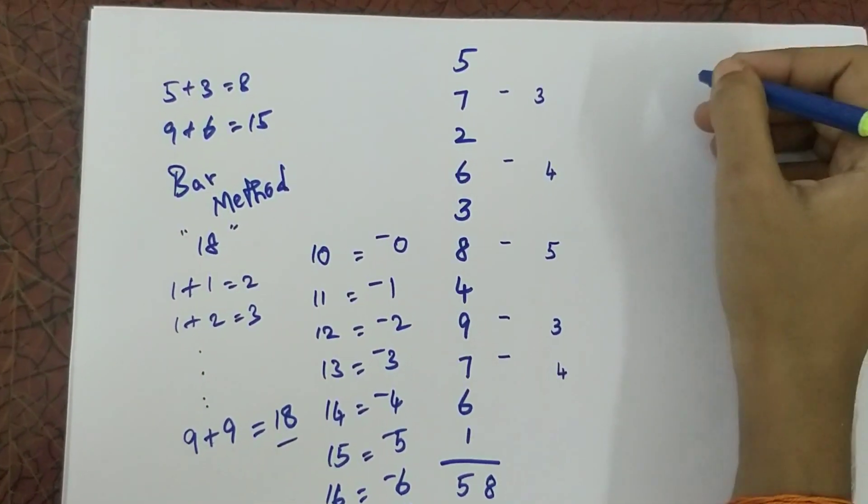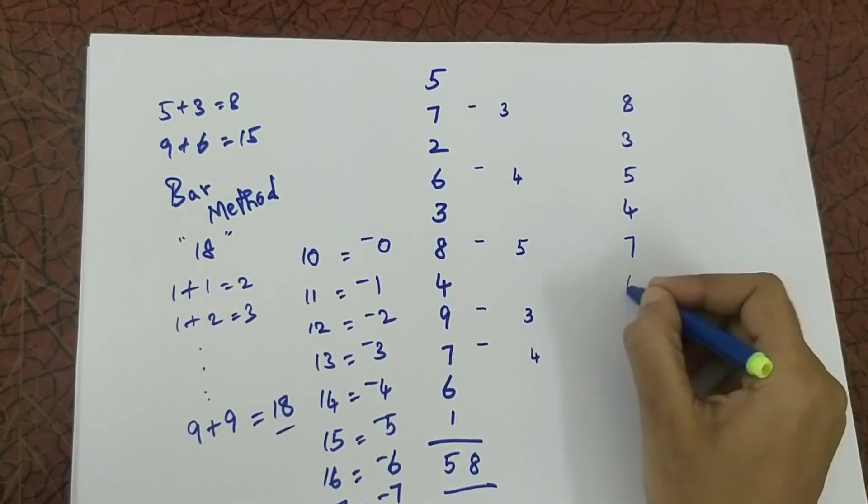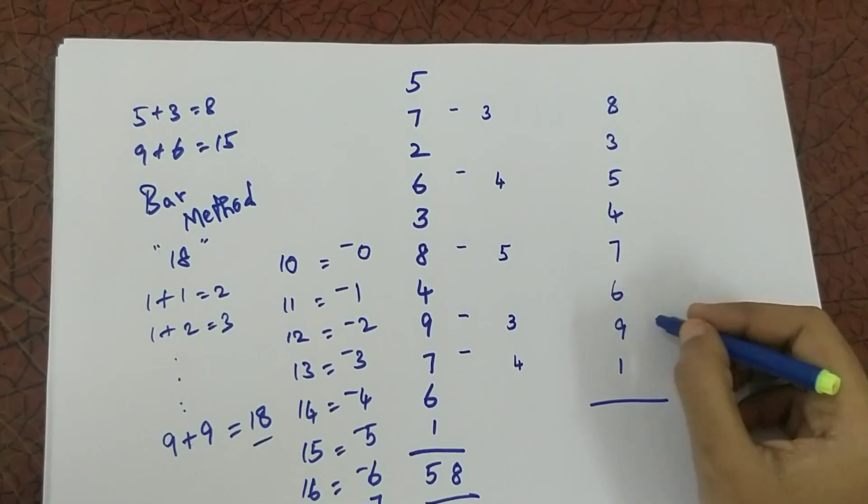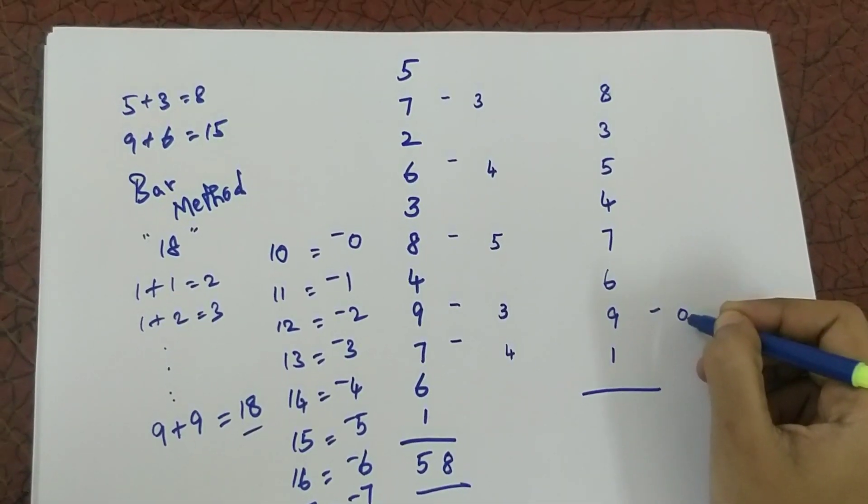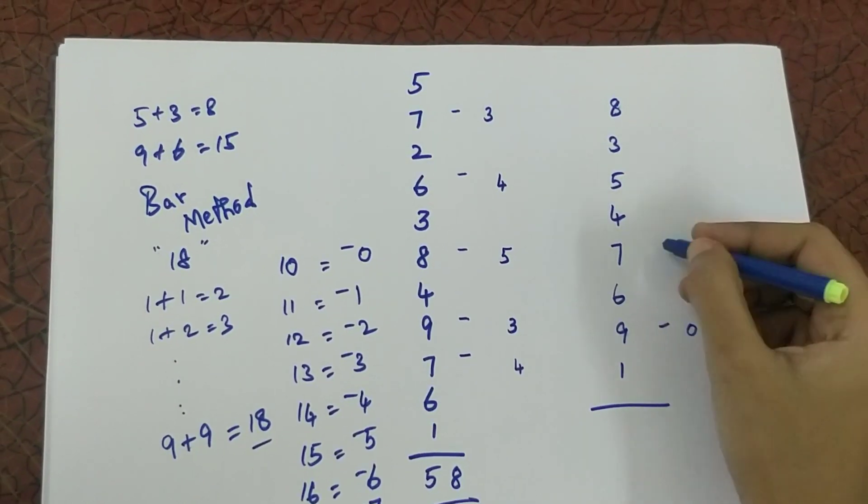I will solve another example for you. 1 plus 9 is 10. So now my answer is 0. 0 plus 6 is 6. 6 plus 7 is 13.